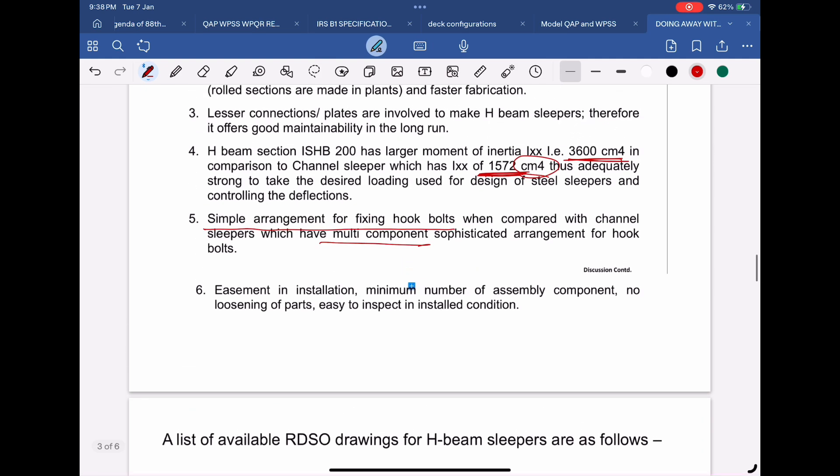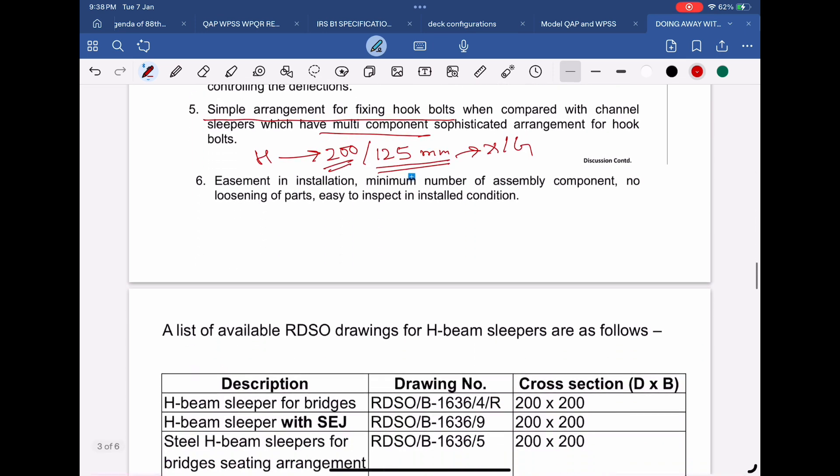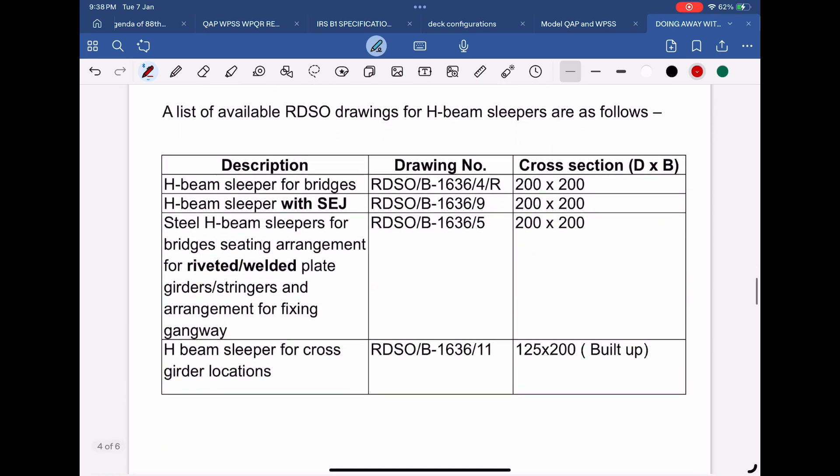One is of 200 millimeters height and another is of 125 millimeters height. The 200 millimeter height sleeper is for normal use and 125 millimeter height sleeper is for use at cross girder locations in open web girders, because the level of cross girder's top flange is 75 millimeters higher than top flange of stringers. In total there are four RDSO standard drawings issued so far.